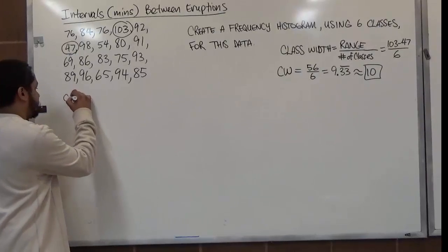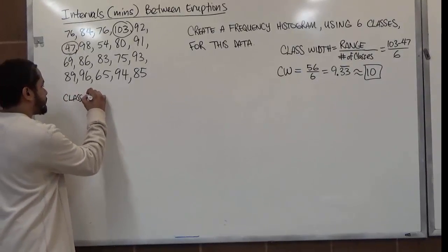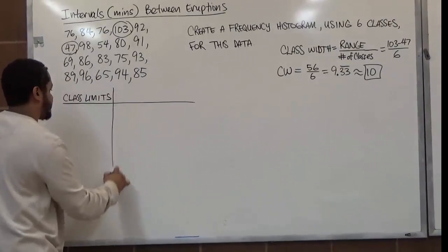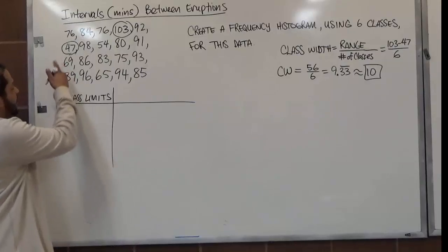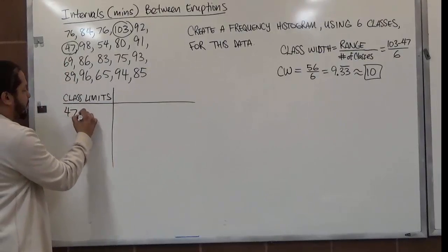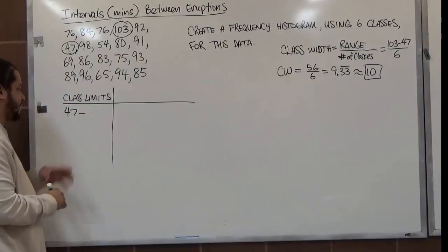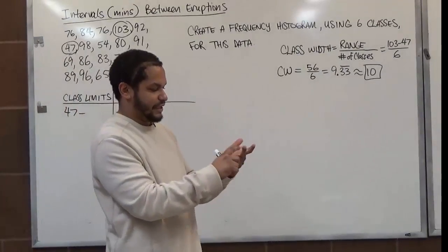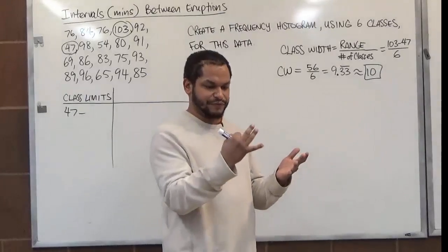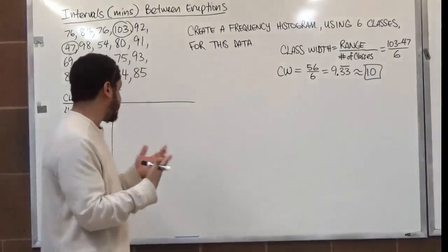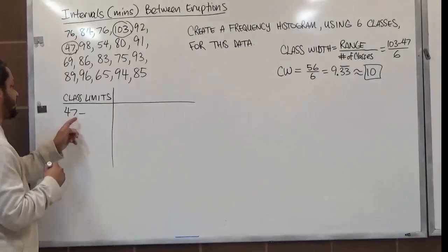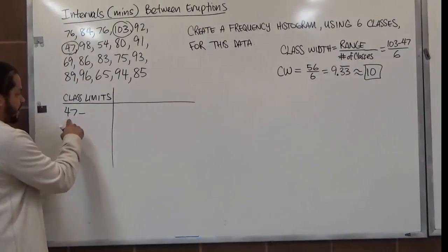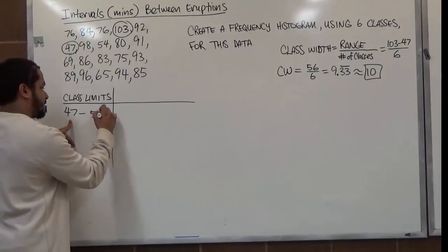Let's see our class limits. Starting from the lowest value, forty-seven, we want to account for the first ten data values: forty-seven, forty-eight, forty-nine, fifty, fifty-one, fifty-two, fifty-three, fifty-four, fifty-five, to fifty-six. Make sure you count carefully — ten values including forty-seven goes up to fifty-six, not fifty-seven.